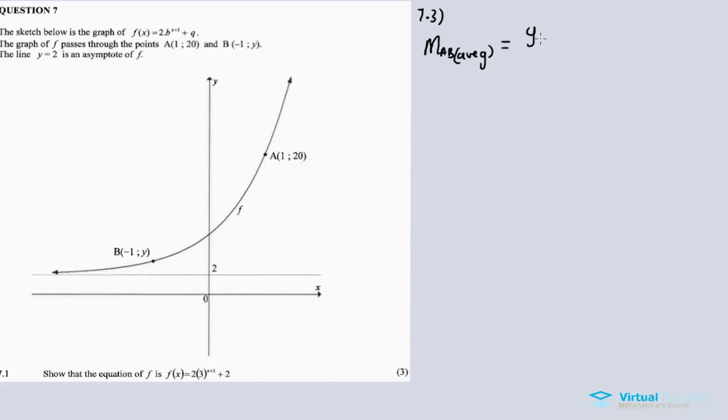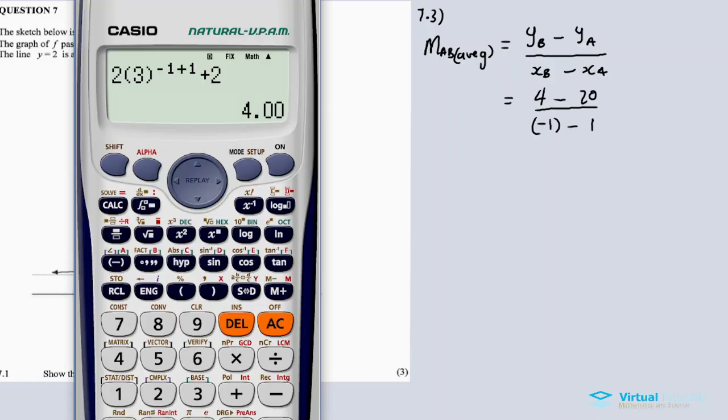7.3. The average gradient M between A and B is equal to y_B minus y_A over x_B minus x_A. What's y_B? y_B is 4. So it's 4 minus y_A, which is 20, divided by x_B, which is minus 1, minus x_A, which is 1.